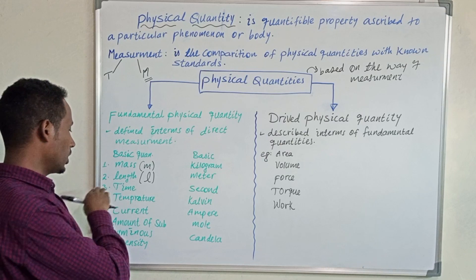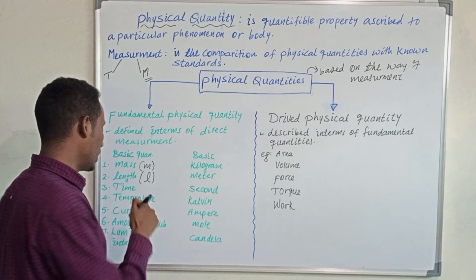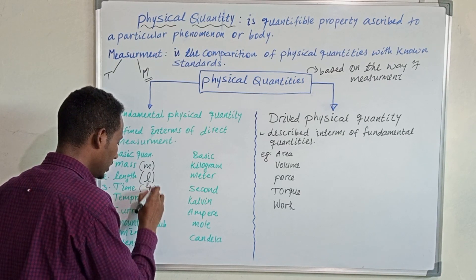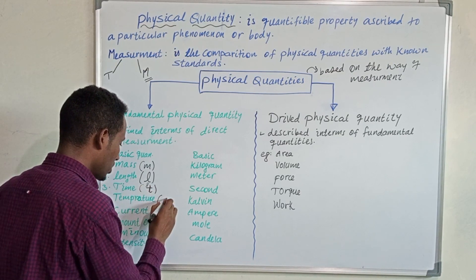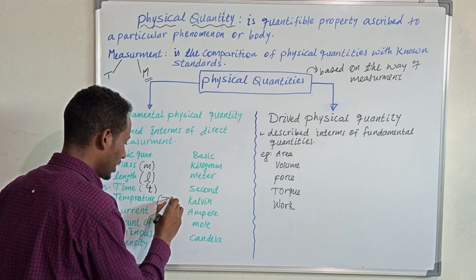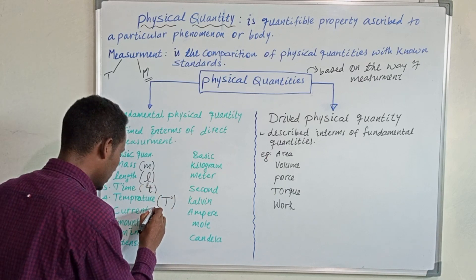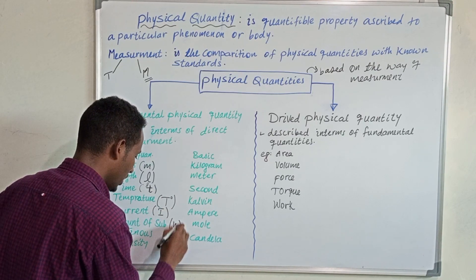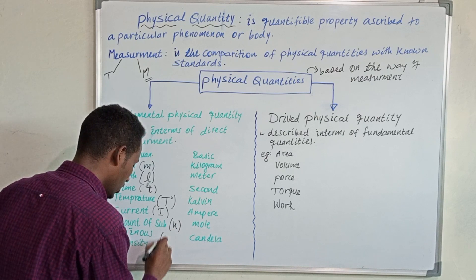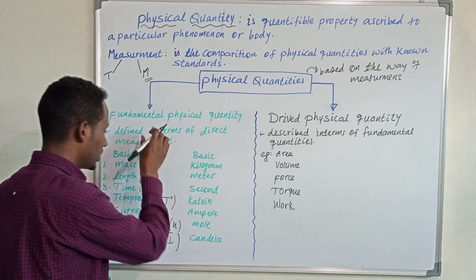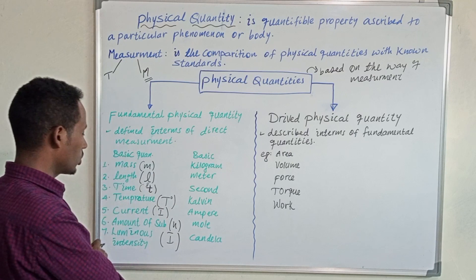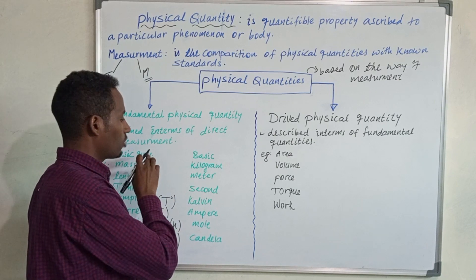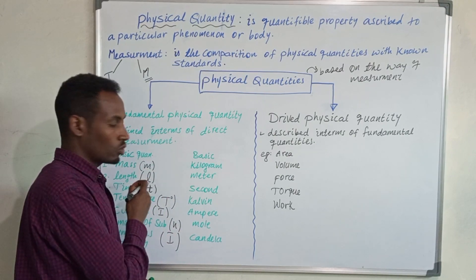Since we are talking about length, it is better to use L. Time is represented by small t, temperature is represented by capital T with a degree sign, current is represented by capital I, amount of substance is represented by small n, and luminous intensity is represented by I. Each basic quantity has its own symbol.